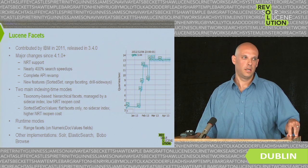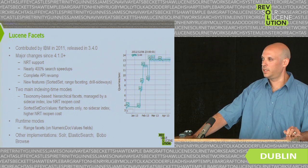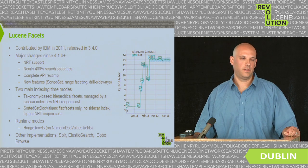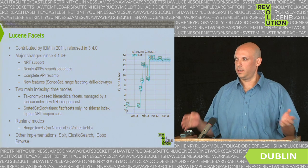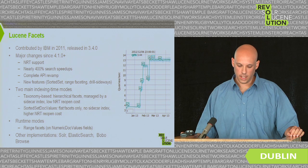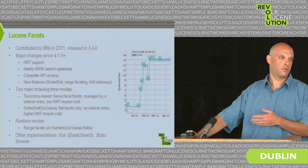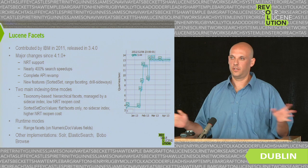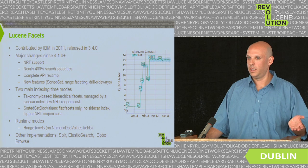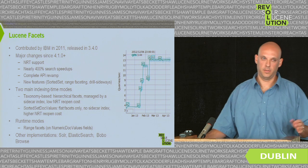The second mode uses sorted set doc values, similar to what Solr does. It currently supports only flat facets, has some higher NRT reopen cost, but carries no sidecar index — so if you're uncomfortable managing two data structures, you might pick that one. There are also some runtime modes: for certain fields you can decide at runtime whether to facet on them. For example, if you're indexing a last-modification-date numeric doc values field, you can do range faceting on it without deciding upfront. Solr and Elasticsearch also have faceted search, as does a project called Bobo Browse — this is not the only implementation out there.